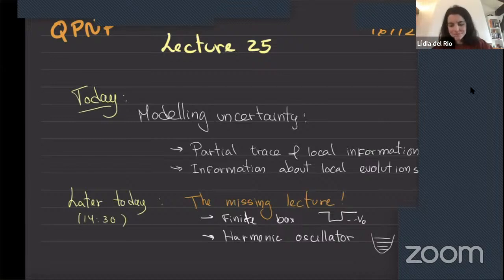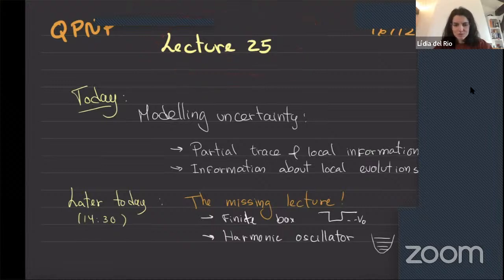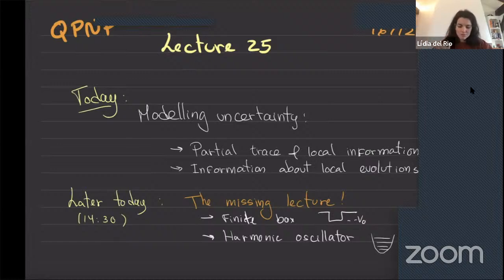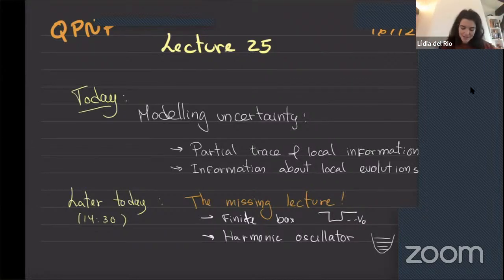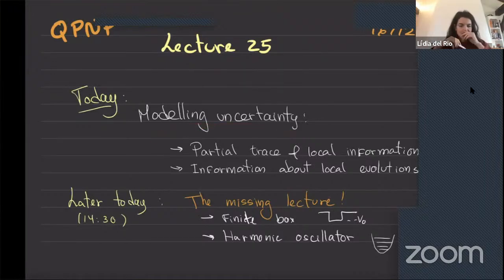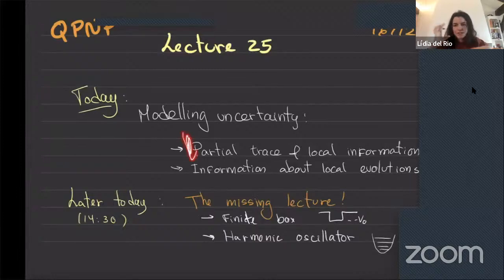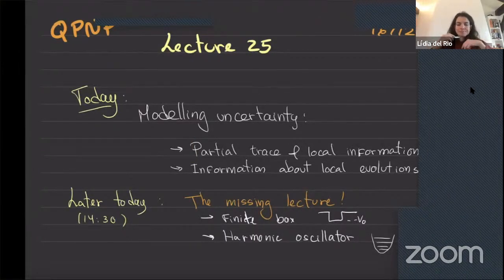Okay, we can start. So hi, welcome back. Welcome to lecture 25. Today what we'll do is continue on this idea of modeling uncertainty — for now about states — and the idea of local uncertainty. We'll go back to the scenario we saw at the end of the last lecture and in the tutorial, where you have two players, Alice and Bob, and we want to model just Alice's information about the global state. We will repeat some of the calculations we did at the end of the last lecture, since I was a bit rushing and there were some questions.